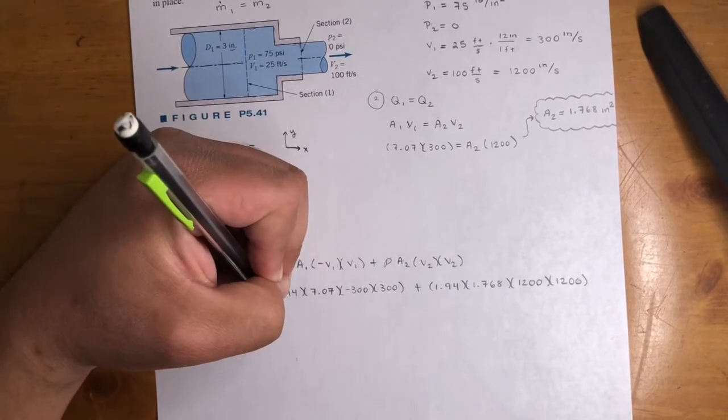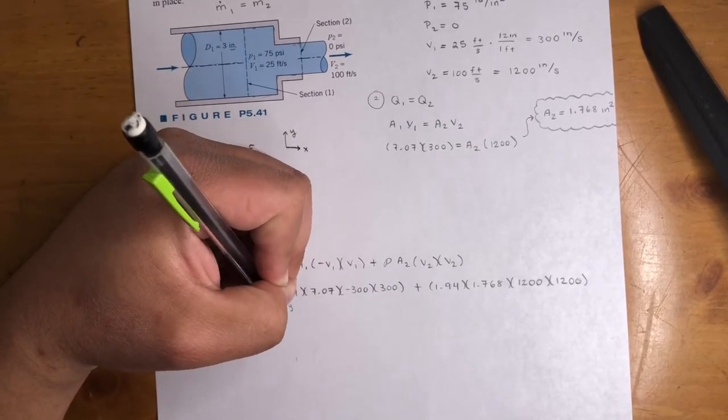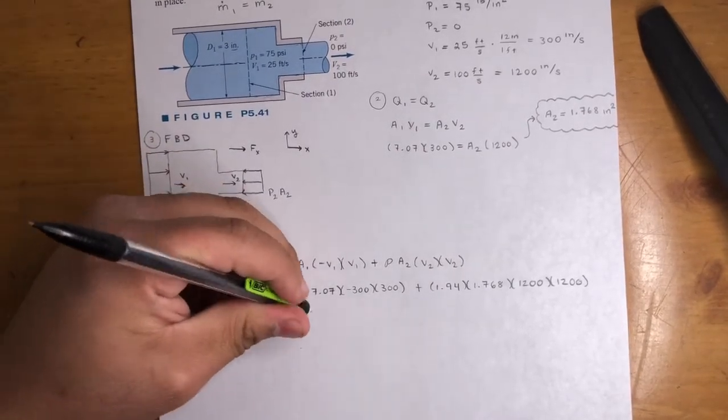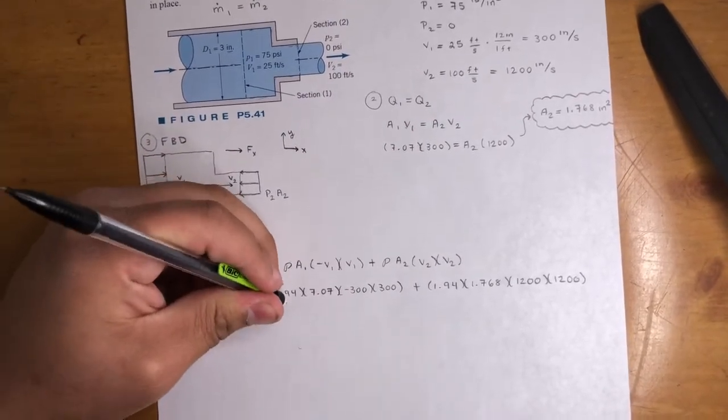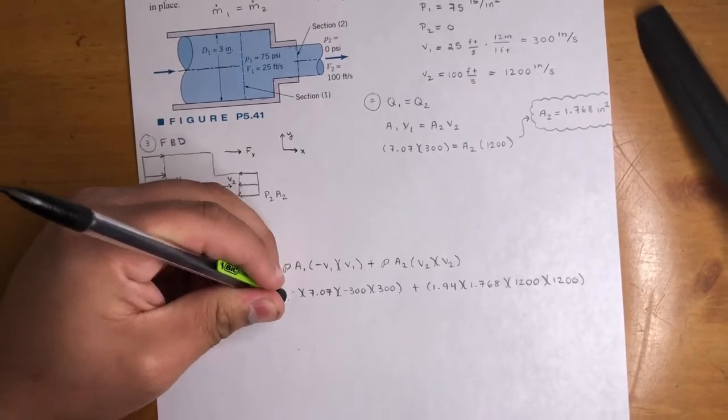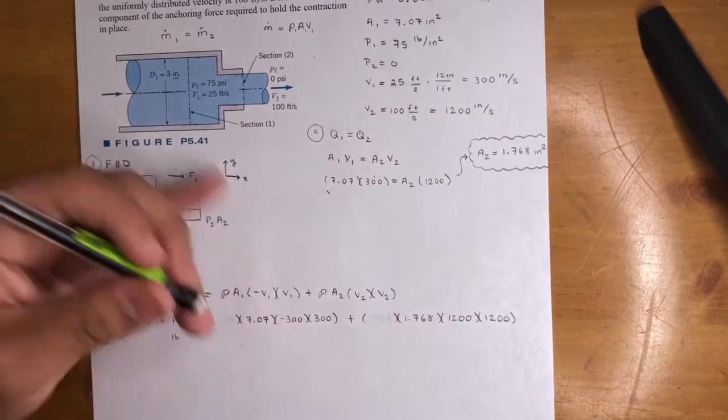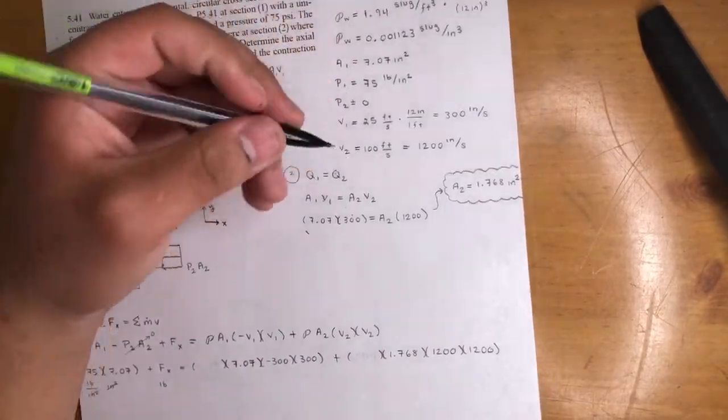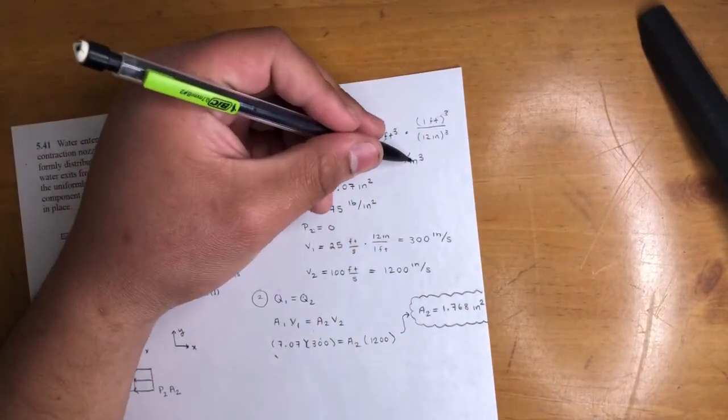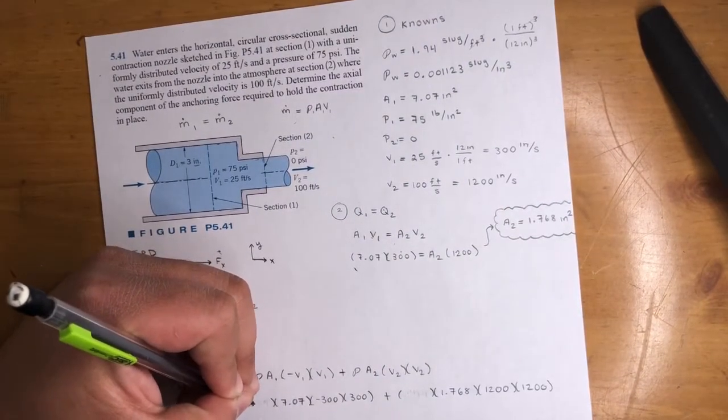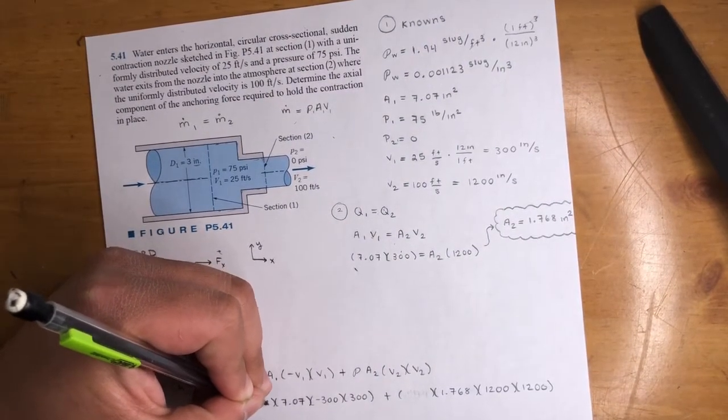So, here, this is a slug. Oh, snap. Hold on. This is not 1.94. Use the wrong one. So, this number and this number. This is slug per feet cubed. We want the slug per inch cubed. So, this number is 0.001123.